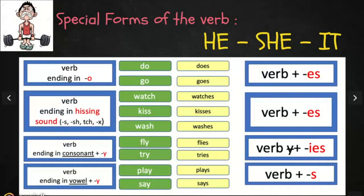We will also add ES to the verb if the verb ends in a hissing sound: S, SH, CH. Watch becomes watches, kiss becomes kisses, wash becomes washes.